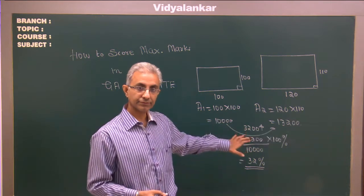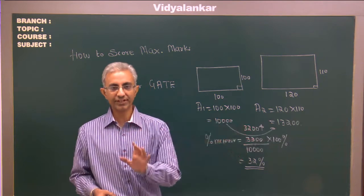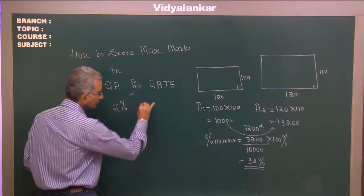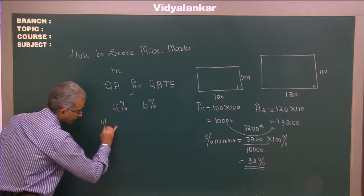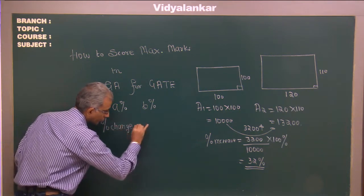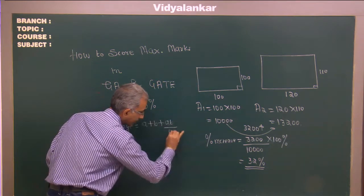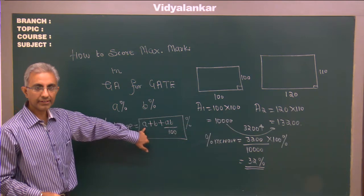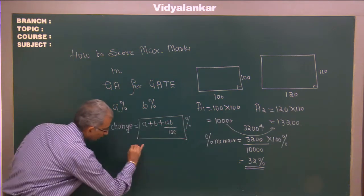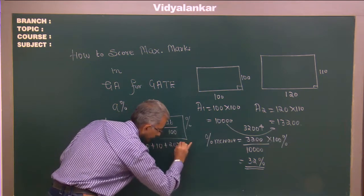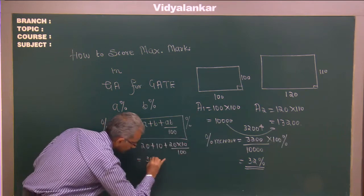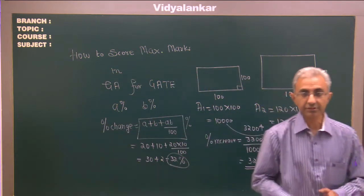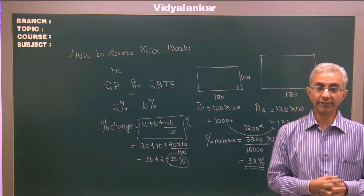Now remember, this is a speed-based examination. I will show you a trick where you can get the same answer in flat 5 seconds. The trick is: suppose your length changes by A percentage and your width by B percentage, your percentage change is given by A + B + AB/100. In this case A is 20 and B is 10, so you can plug in and solve instantly. These are the tricks you require for solving your GA section.